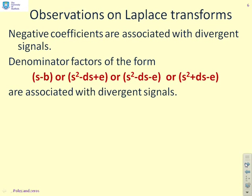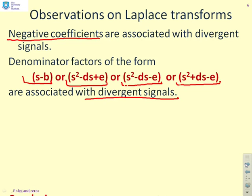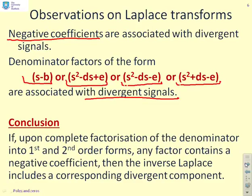So what's the summary? If we saw a negative coefficient in our polynomial, so an s minus b, or s squared minus ds plus e, or s squared minus ds minus e, or s squared plus ds minus e, you'll notice all of those have one or two negative coefficients, then those denominator factors are associated with divergent signals. A conclusion: if after we've done a complete factorization of the denominator into first and second order forms, if any of those factors contain a negative coefficient, then the inverse Laplace includes a corresponding divergent component. We need to avoid negative coefficients in the single factors and quadratic factors if we want the signal to be convergent.